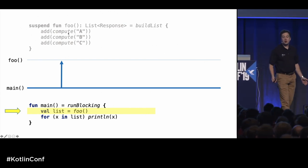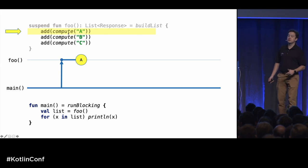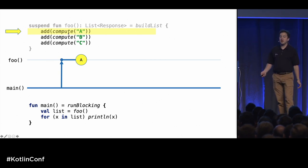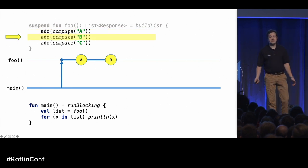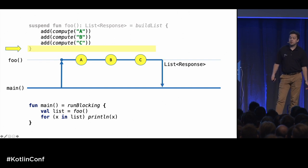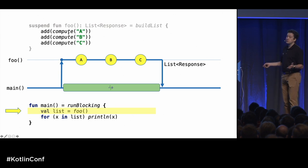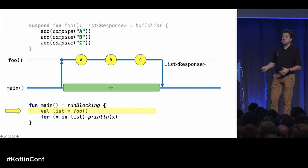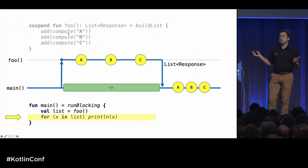So how it works: I call foo, execution goes to foo. Foo computes value A and adds it to a list, then computes B, adds it to the list, then computes C, adds it to the list. Then the list gets returned, execution goes back to the main function, which was waiting for the results. Then it iterates over the list and prints it — easy, normal sequential execution.